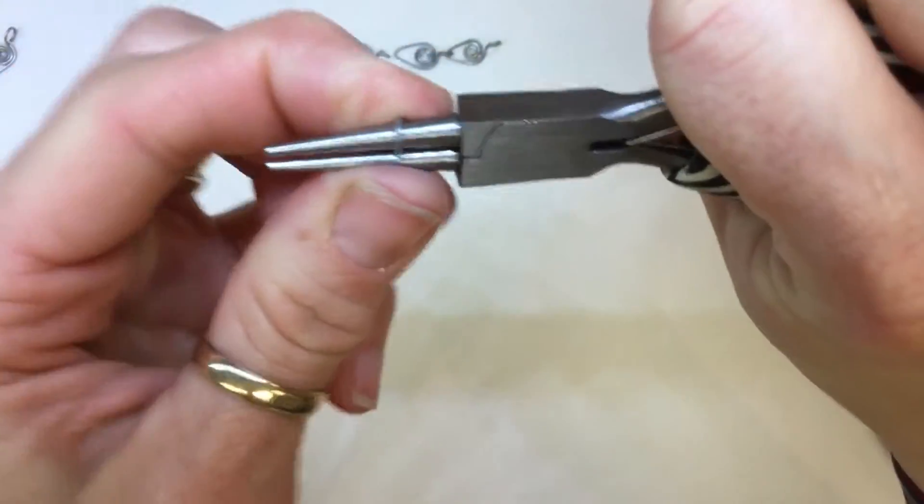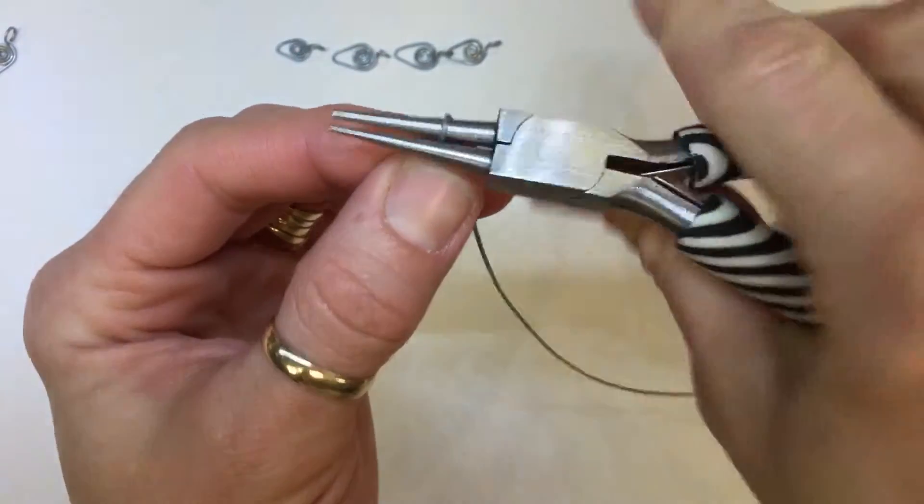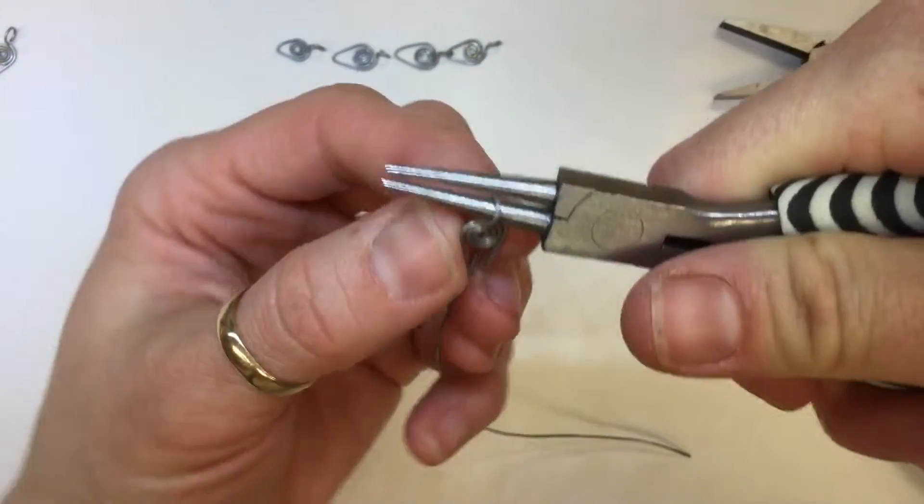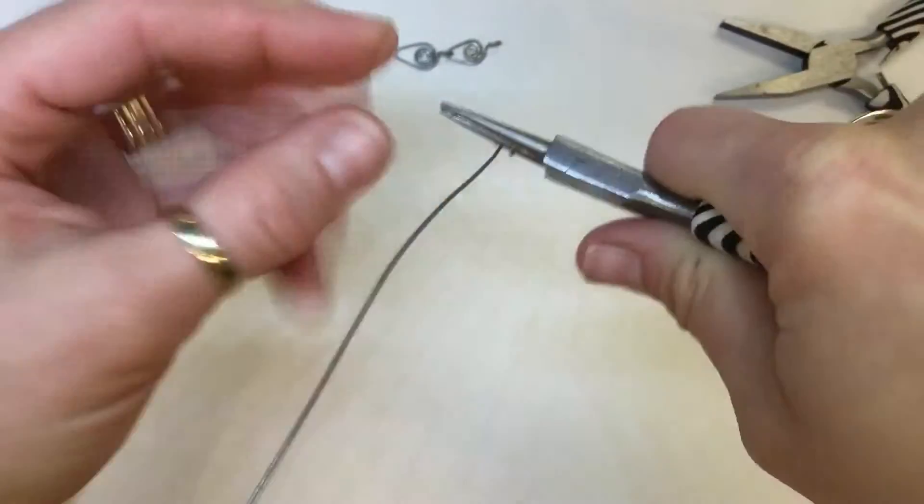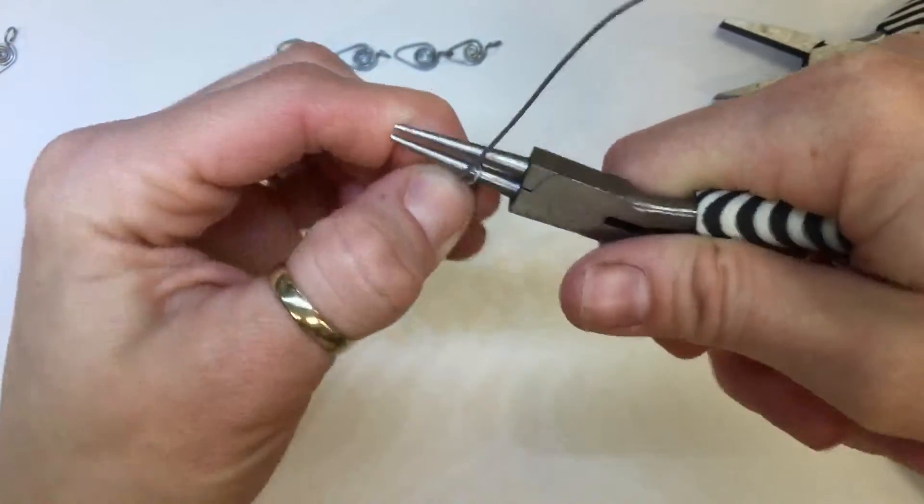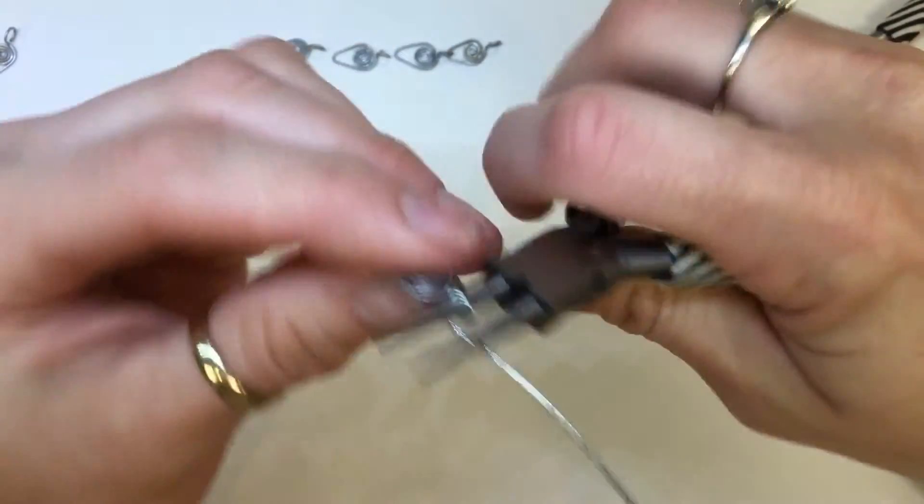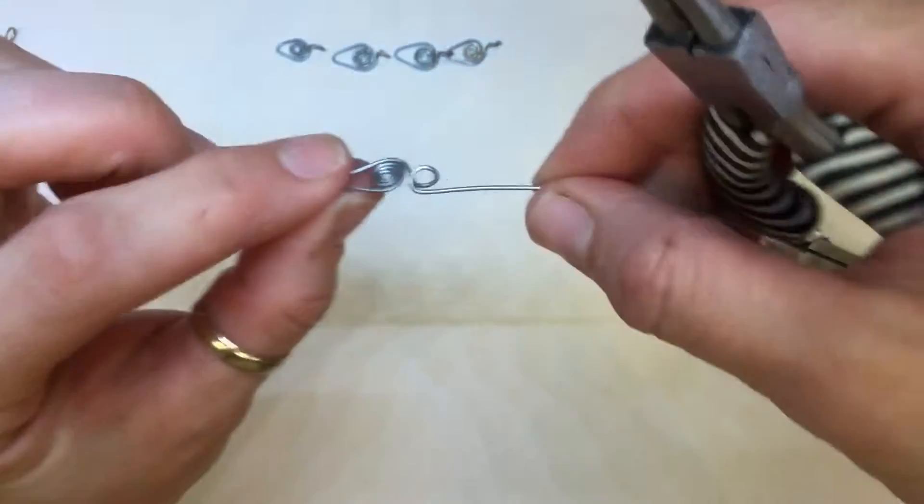I'm going to go all the way around as far as I can and reposition so I can get a complete loop. Go past that spiral. So I should have something like that.